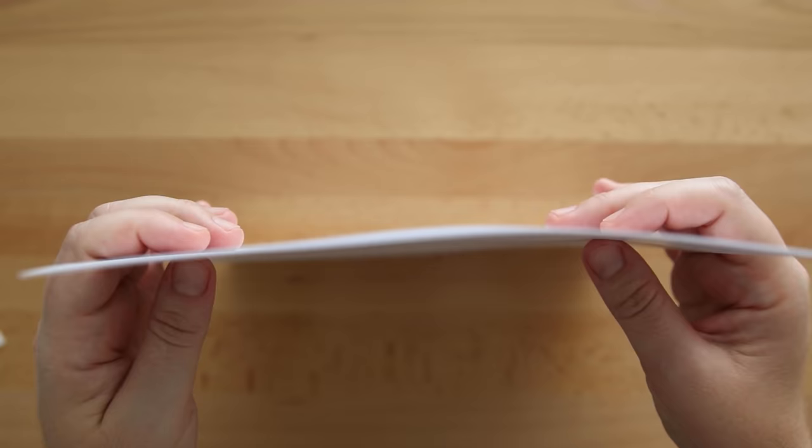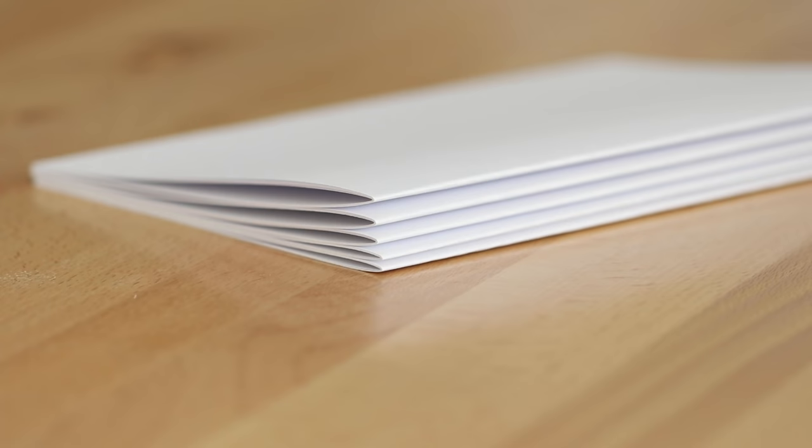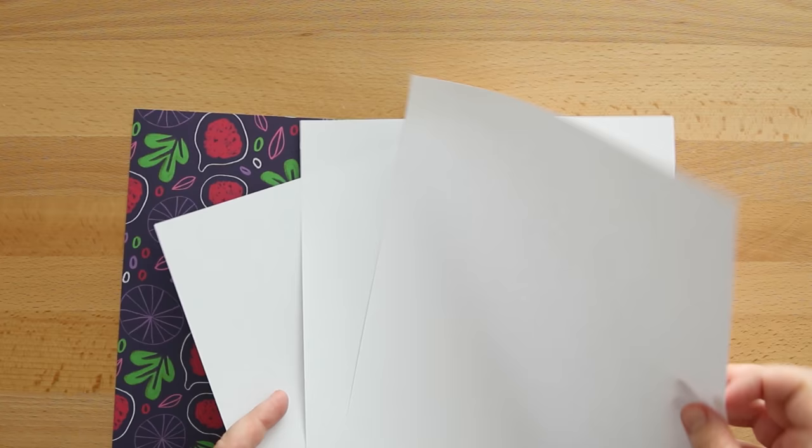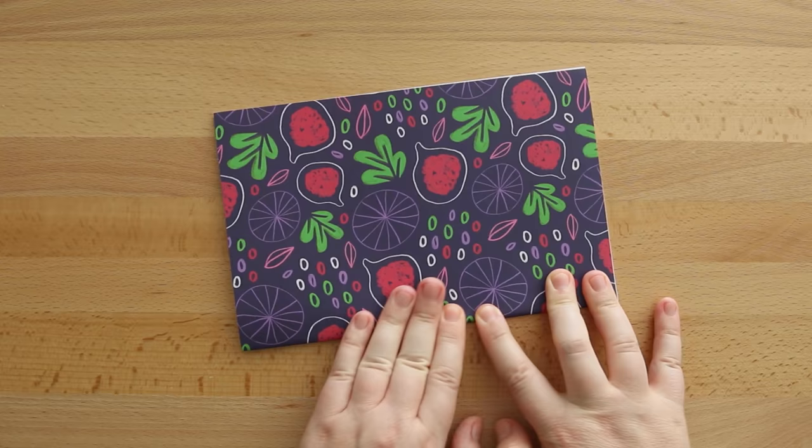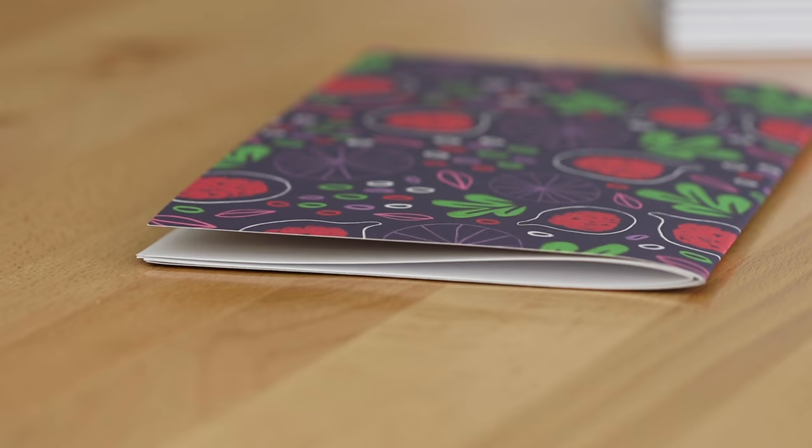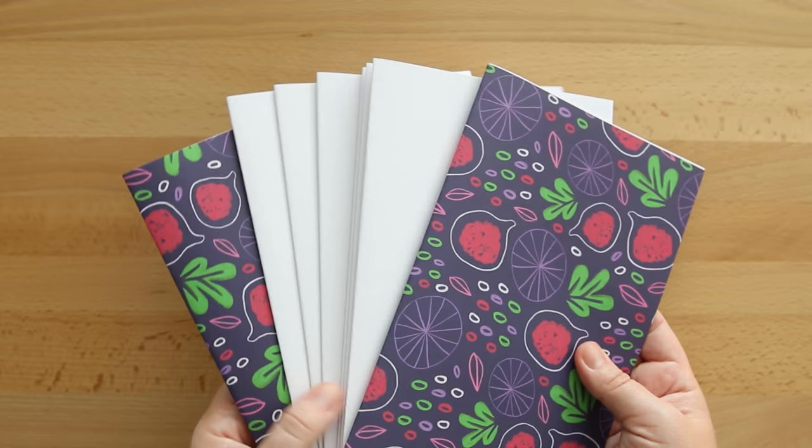Now I'm stacking four sheets together and folding them in half to make a signature. I made six signatures this way. For the front and back signature, I'm using three sheets of the white paper and putting that inside the cardstock. Folding it in half and making two of those. So total I have eight signatures.